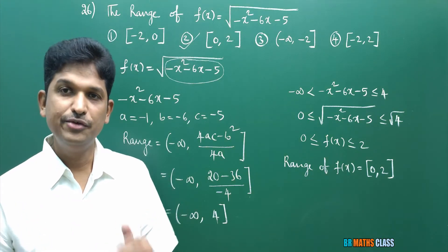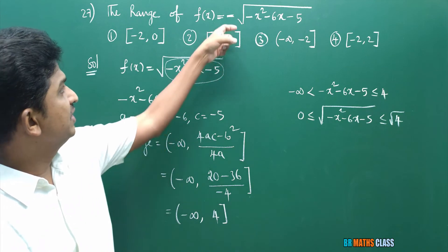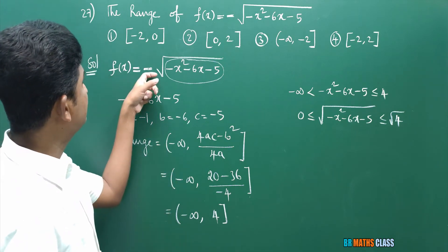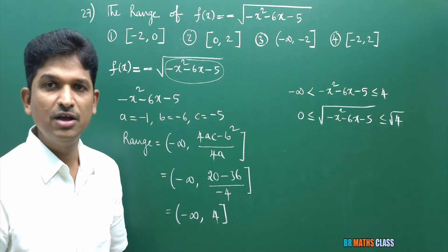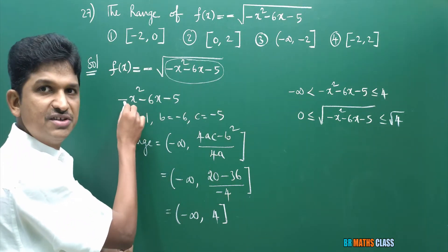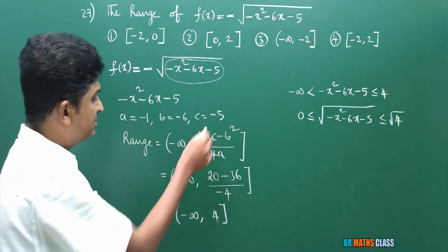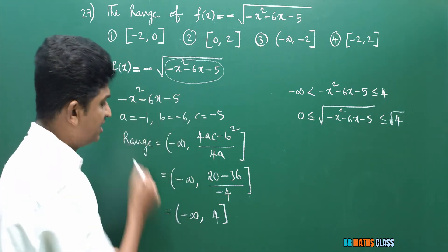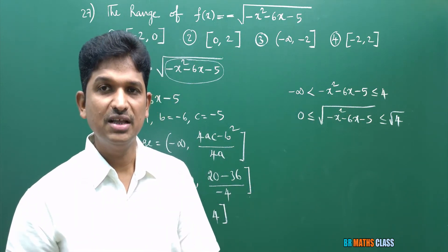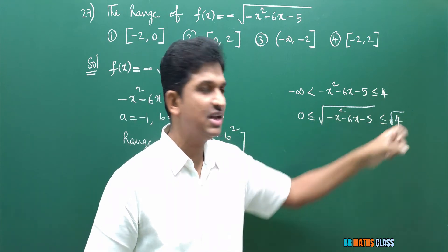I hope you understand this. Now we will move to the next question. Observe question number 27. This problem is very similar to the earlier problem. The only difference is that here there is a minus sign outside. f of x is minus square root of minus x square minus 6x minus 5. First I will find what values that inner expression gives. As the x square coefficient is negative, A is negative. Using the same formula, substituting the same ABC values, I got that the inner expression lies in (-infinity, 4]. So 0 ≤ root over (minus x square minus 6x minus 5) ≤ root 4.